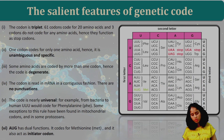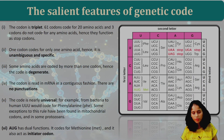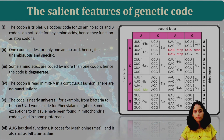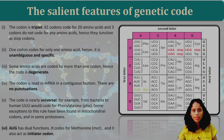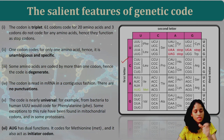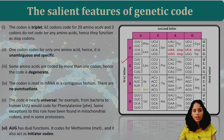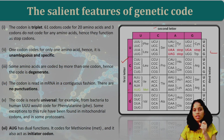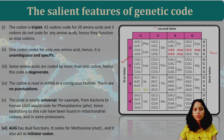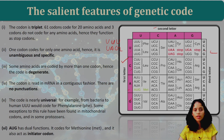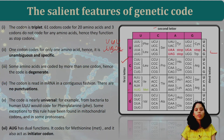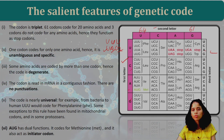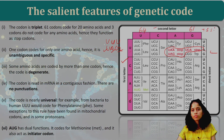Now, the salient features of genetic code. The most important part of this topic: first, the genetic code is a triplet — three nitrogen bases form one codon. There are four bases: uracil, cytosine, adenine, and guanine. There are 64 codons total, 61 of which code for amino acids, and the other 3 are stop codons.